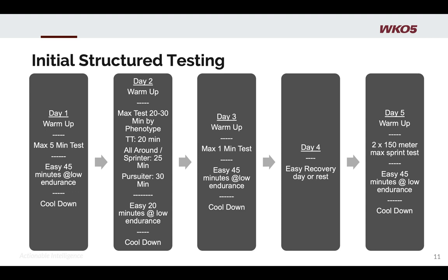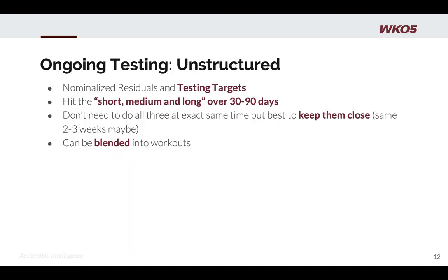Day five is a simple good warm-up, then two times 150-meter max sprints — just short, super hard, super fast. Spin around for 45 minutes and cool down. Once you get through these five days, your model will be very clean and very tight. I'll show you what that means in a moment. I just do my structured testing at startup or after extended breaks.